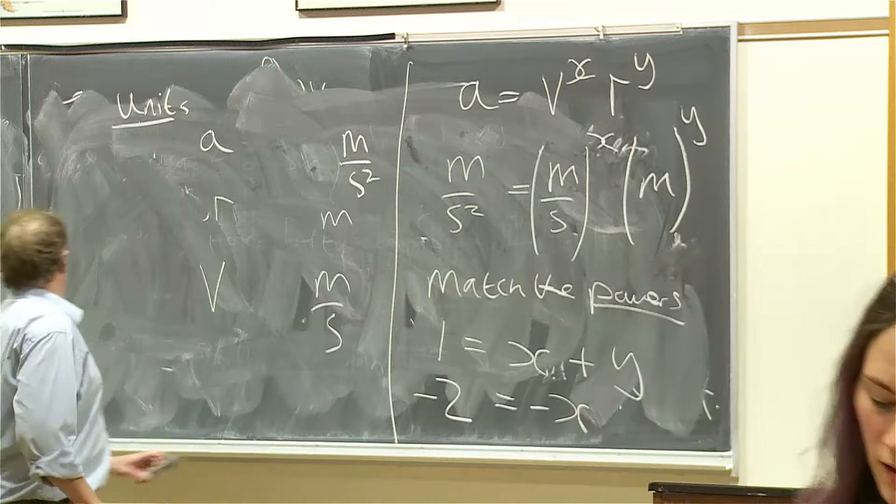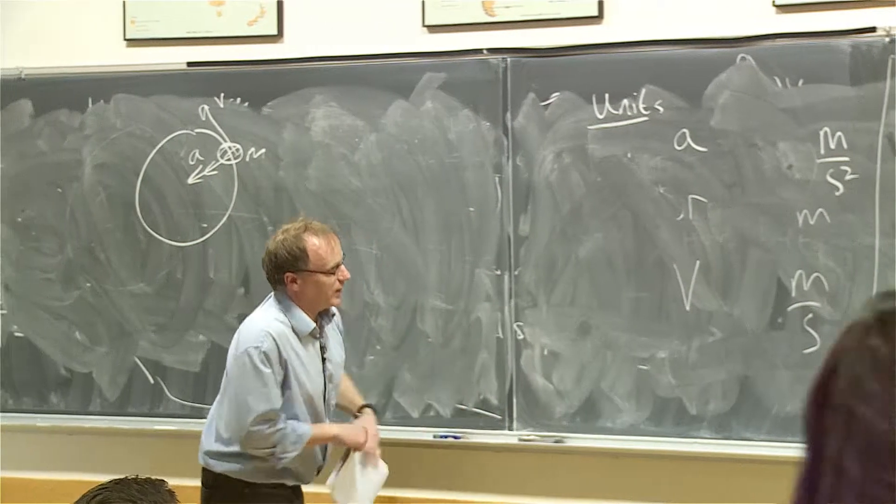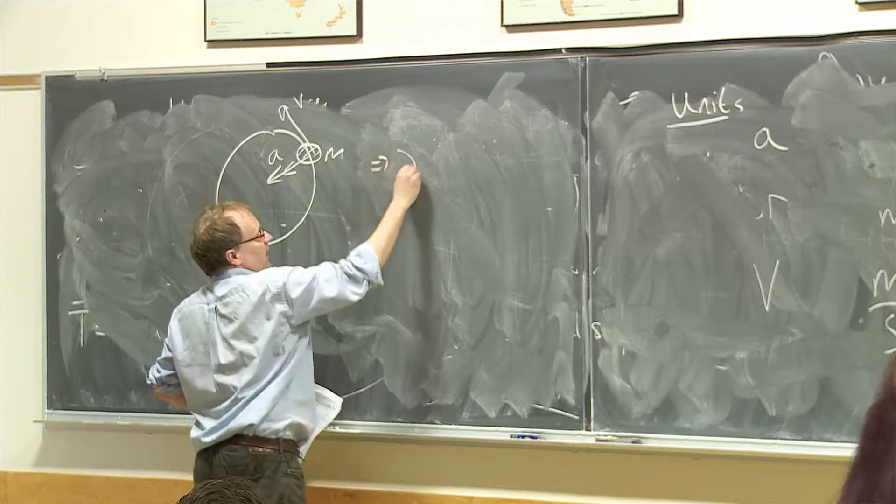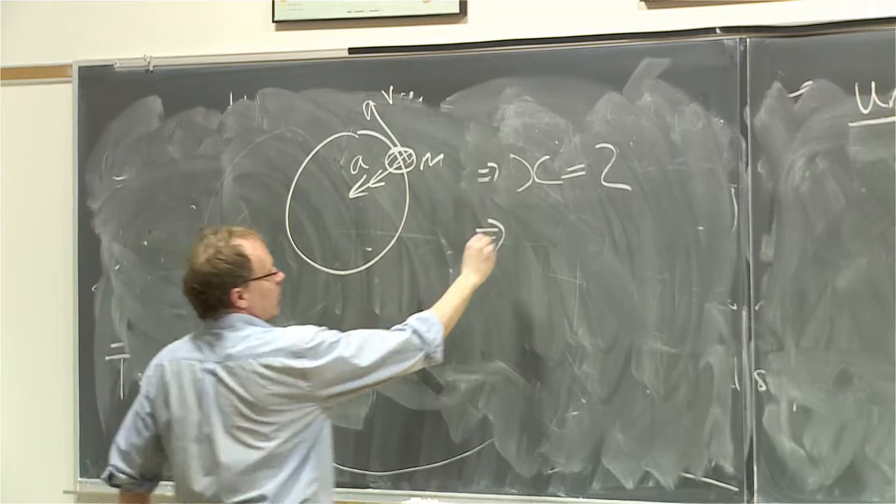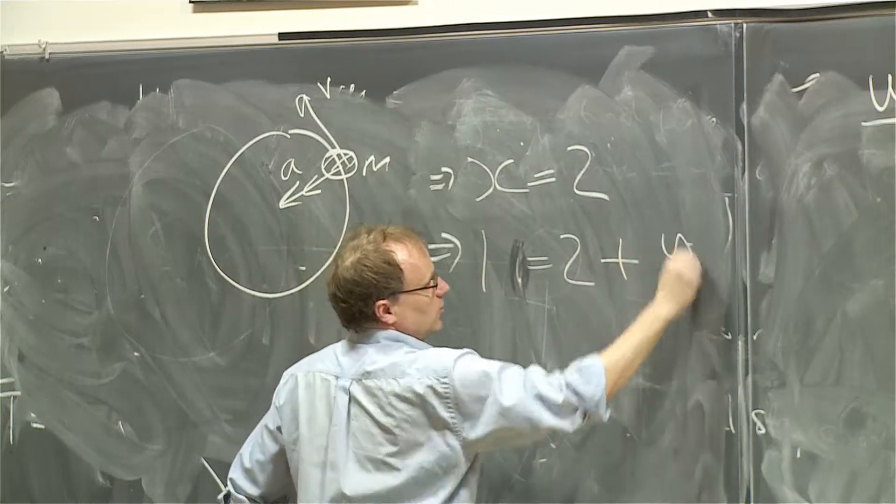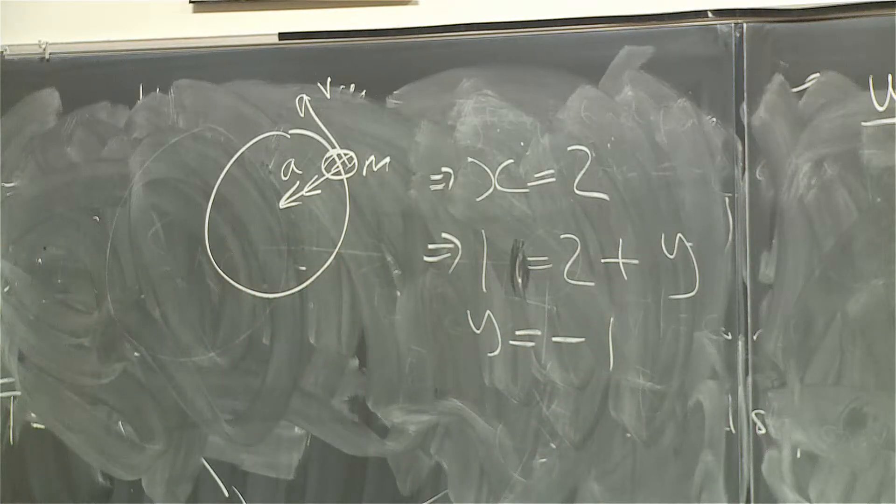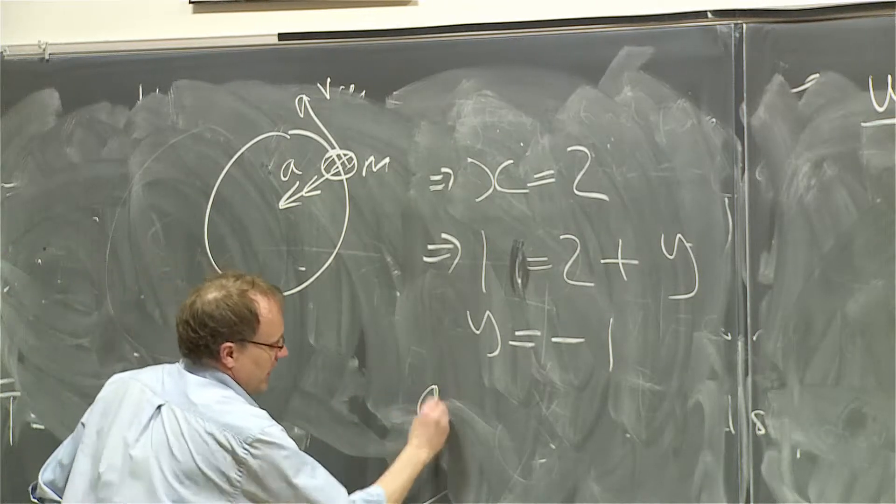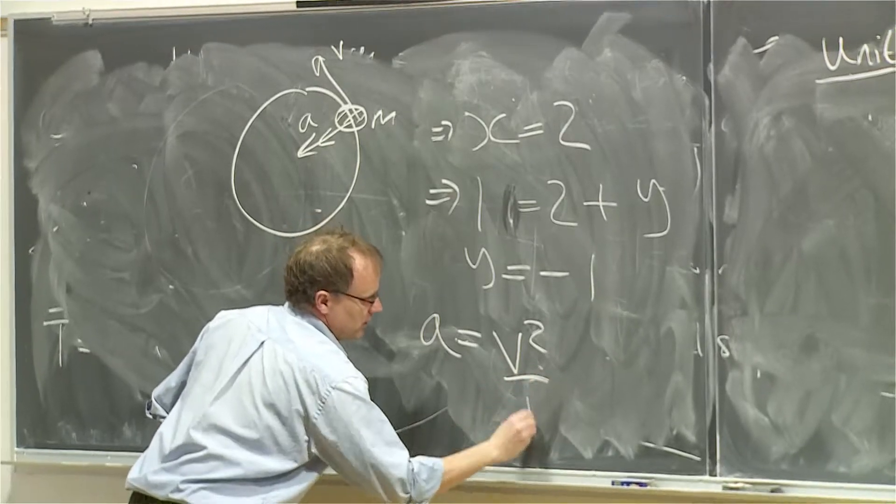So that tells me the value of X and Y. So we have, this tells me that X equals 2. And the first equation says that 1 equals X plus Y, which tells me that Y equals minus 1. And that gives me the equation for A, which tells me that A equals V squared over R.